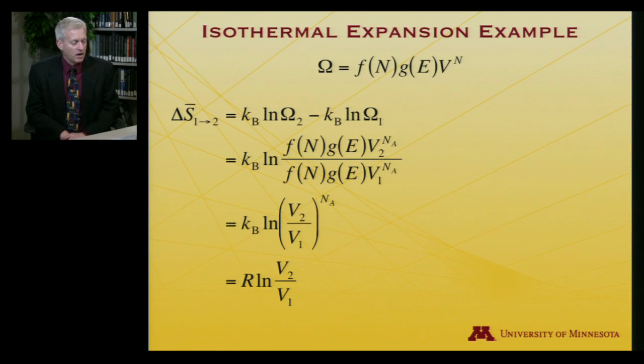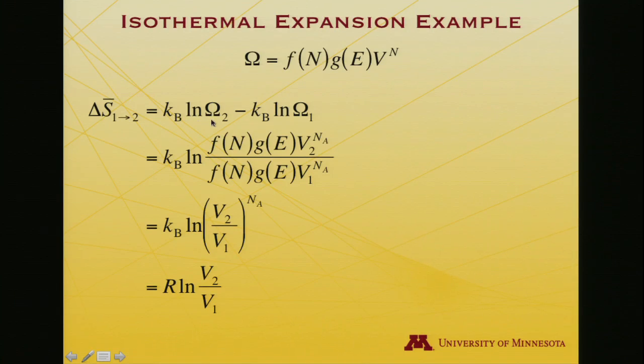In that case, I want to work out delta S. And let's use a molar quantity so that n is Avogadro's number. As I go from volume 1 to volume 2, that's going to be k log degeneracy for the final state, state 2, minus k log the degeneracy for state 1. And so I'll write out those degeneracies: f of n, g of e, V_2 to the Avogadro's number power. Same thing in the denominator except V_1.